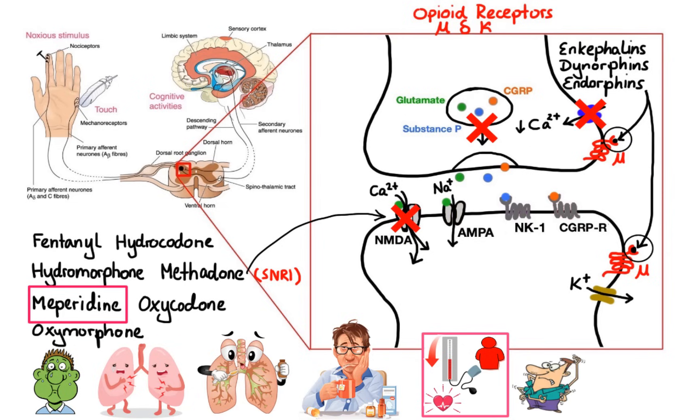All opioids can cause itching via central action on pruritoceptive neural circuits. Opioids also decrease gastric motility and prolong gastric emptying time, which may cause constipation. Likewise, opioids depress renal function and produce antidiuretic effects. They also increase sphincter tone and thus may cause urinary retention.